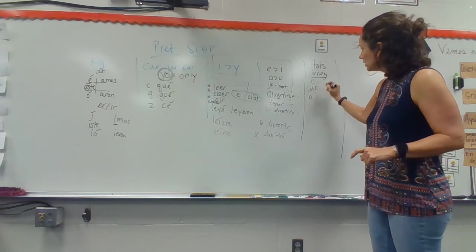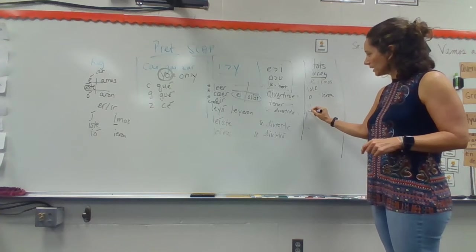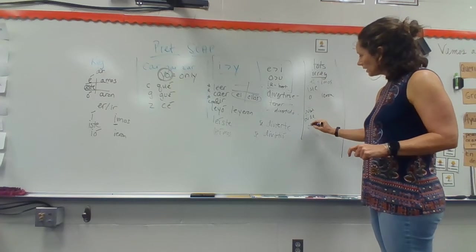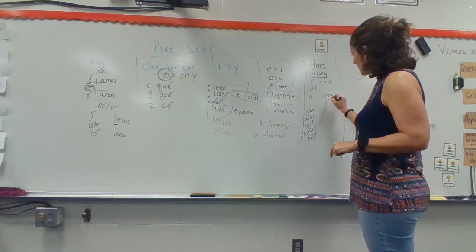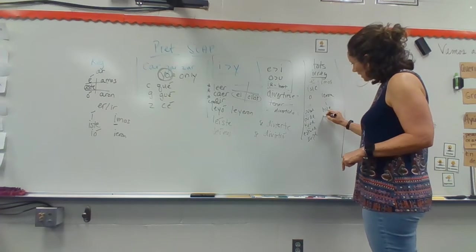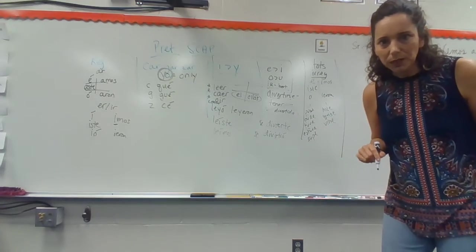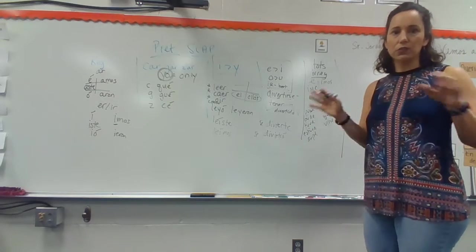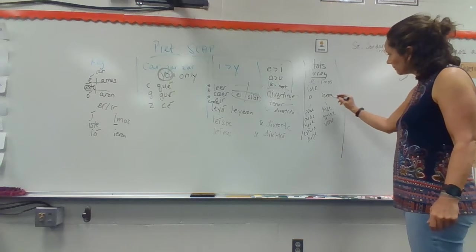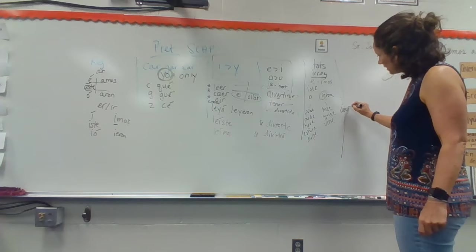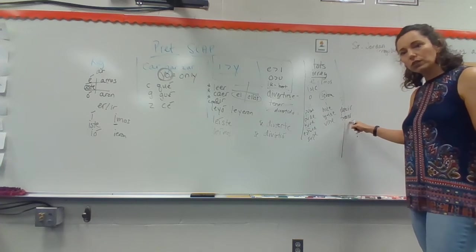But these totes irregs, these are their endings now. E. Iste. O. Imos. Ieron. And these have stem changers that go all the way through. U stem changers like puse, pude. What else goes U? Tuve. Estuve. And supe. I stems that have an I all the way through. Like hice and quise and vine. The I goes all the way through. And then we have what I call J stems. And the deal with the J stems is we have to drop the I in the ieron. And we have decir and we have traer that do that. And it becomes dije, dijiste, et cetera, traje, trajiste, et cetera.